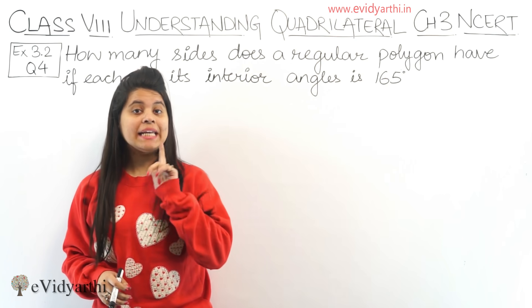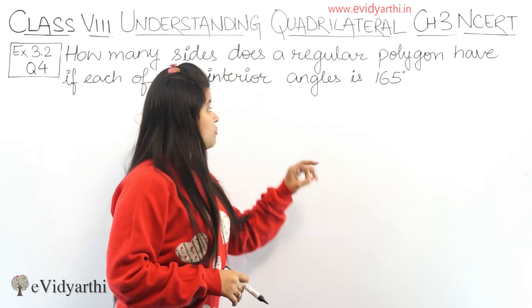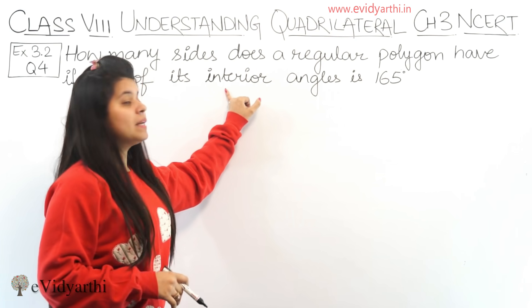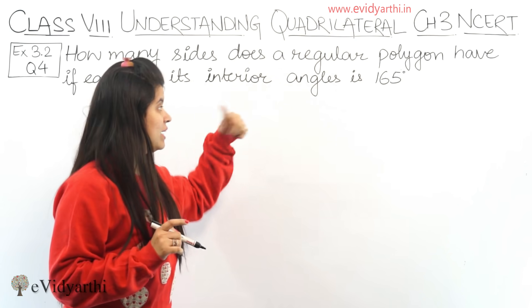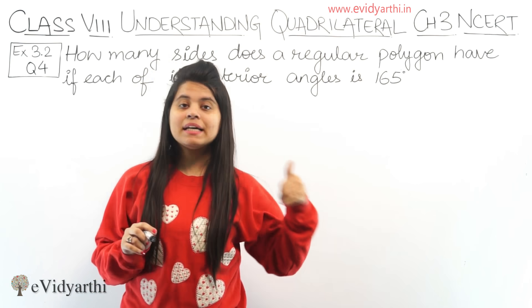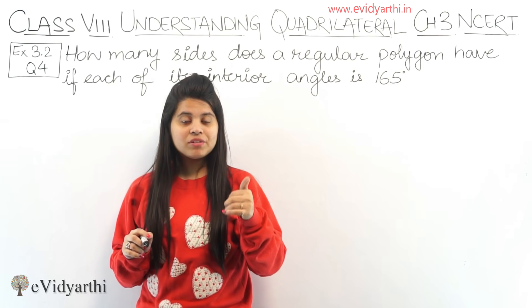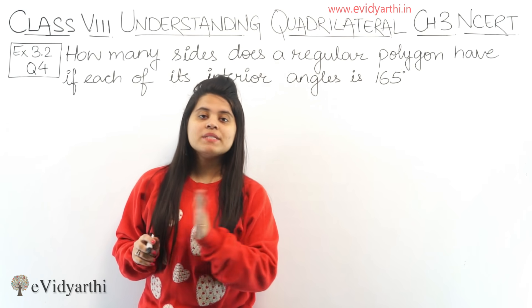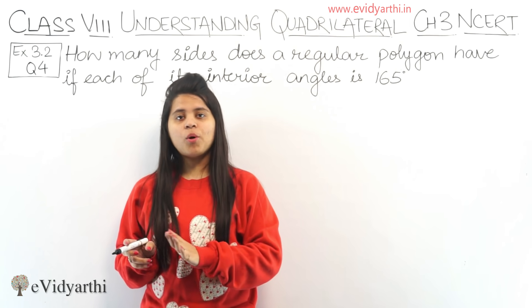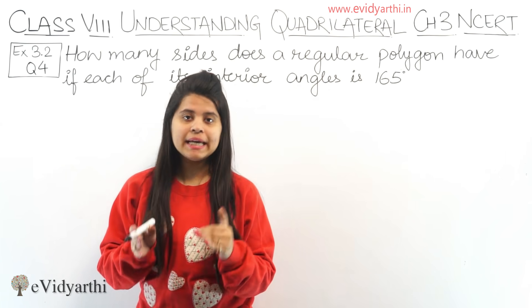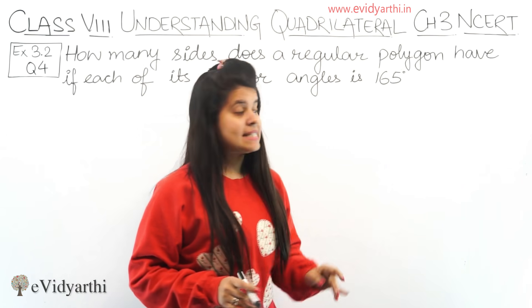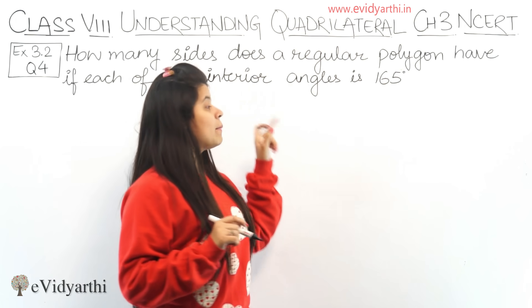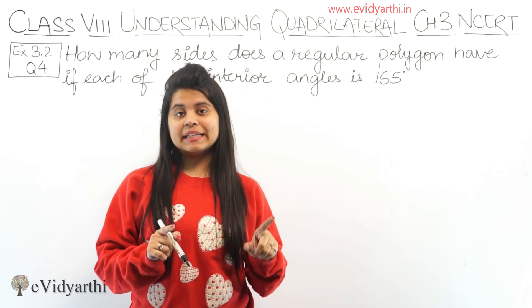This is similar to the last question, but the difference is that here the interior angle is given. In the previous question, the exterior angle was given. So we used the sum of exterior angles property to find the number of sides. But here, the interior angle is given.